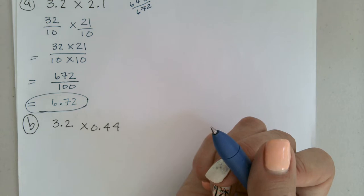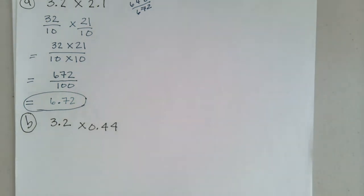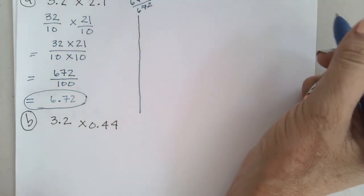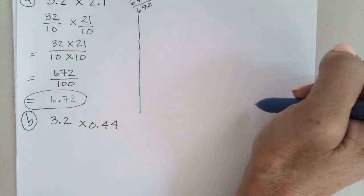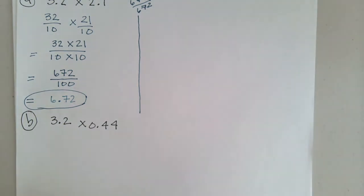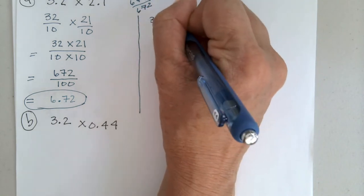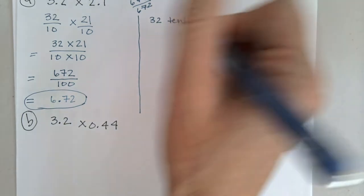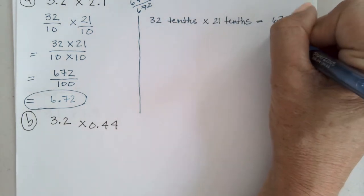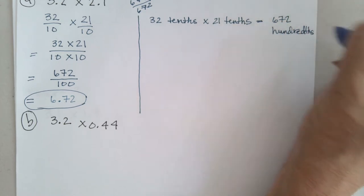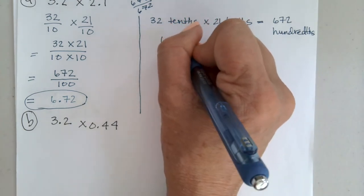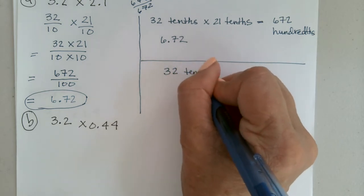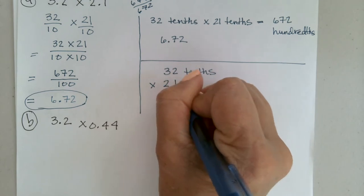Now let's try it again using the unit form — that's a second way. Here's one way; I'm going to show you a second way, and we will get to the third way. So we have 32 tenths multiplied by 21 tenths, which equals 672 hundredths, which ends up being 6.72.